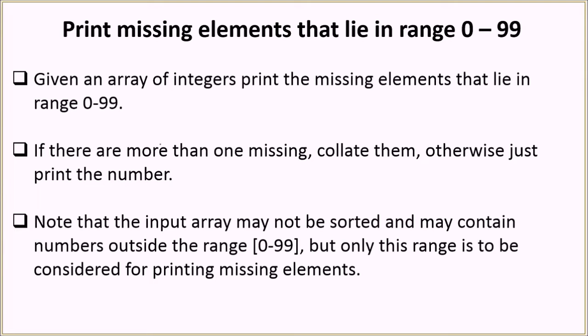In this problem you will be given an array of integers and you have to print the missing elements that lie in the range of 0 to 99. There may be a case that more than one element is missing, so if that is the case then we collate them, otherwise you print just the single number. There are a few considerations which we need to take care about in this problem. The first one being that the input array may not be in sorted order, so the elements may appear in any order.